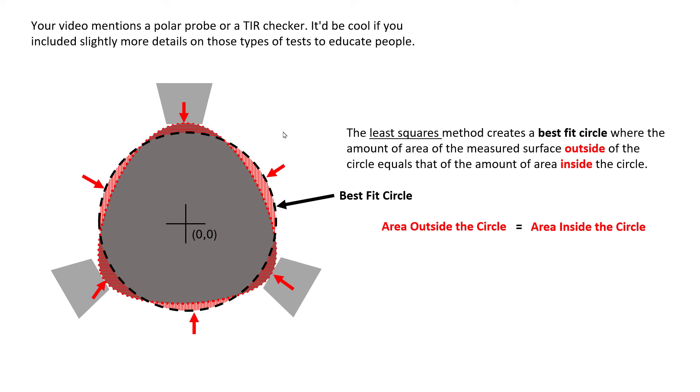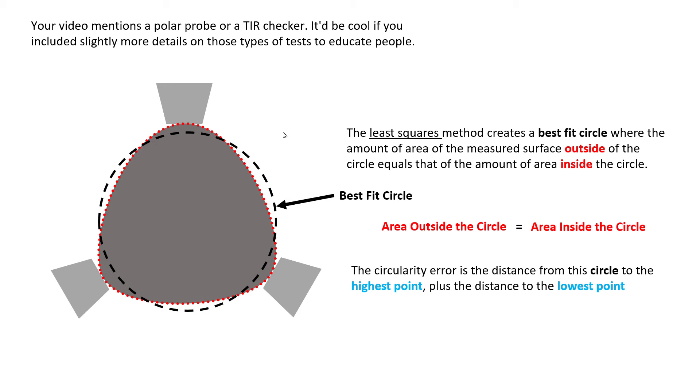So now if we have a best fit circle, the next step in order to understand, let's say circularity, is to measure the highest point with respect to that circle and the lowest point with respect to that circle. So here we see the highest point, the point that deviates the most away from that circle, and we also have the point that deviates the most in the other direction, the lowest point from that circle. If we were to add up that value, those radial distances between each other, the distance between those two points would equal the circularity.